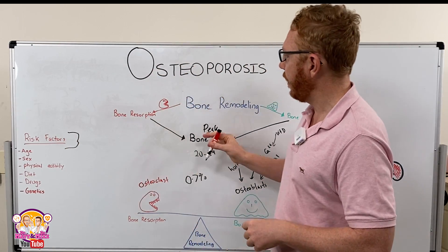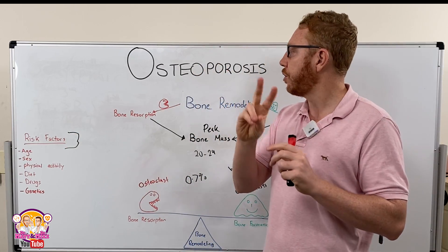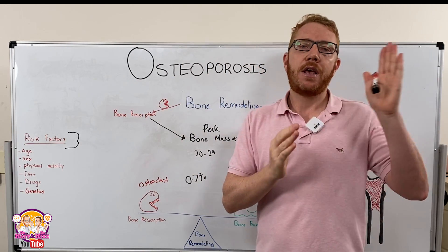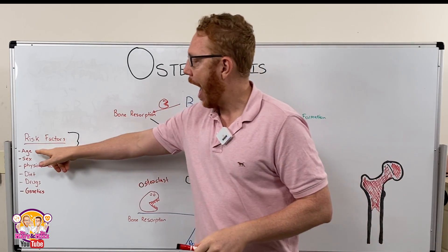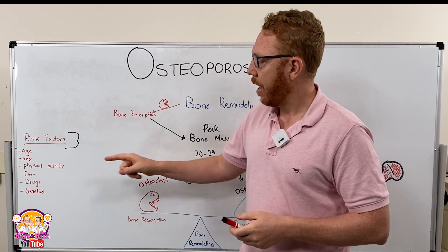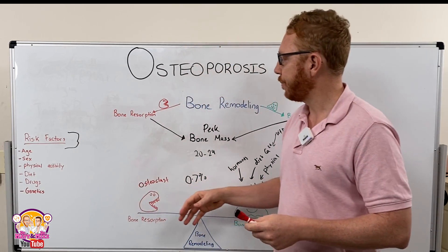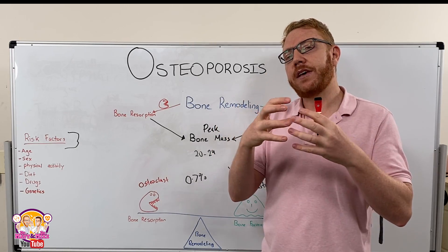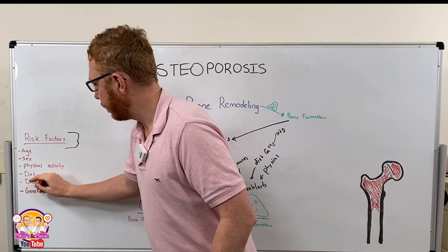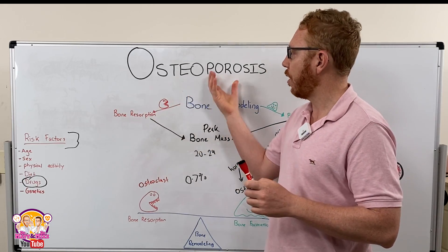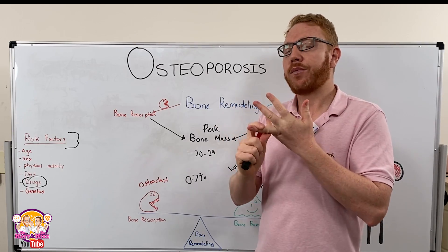There are two types of osteoporosis: primary and secondary. Primary osteoporosis is further divided into age-related or senile osteoporosis, and sex-related or post-menopausal osteoporosis. Secondary osteoporosis means osteoporosis is secondary to an underlying disease. Common drug causes include corticosteroids, proton pump inhibitors, some anti-seizure medications, and heparin.